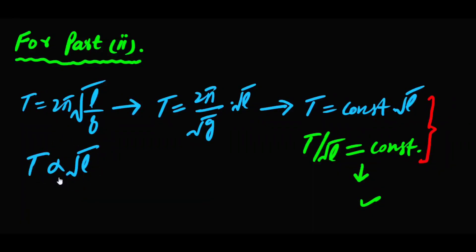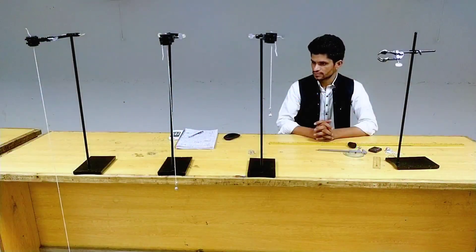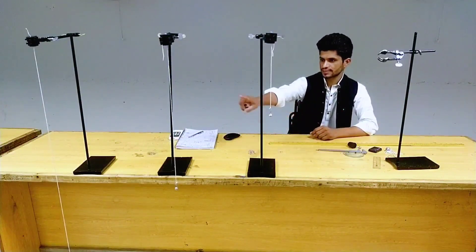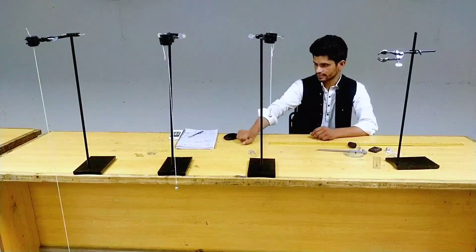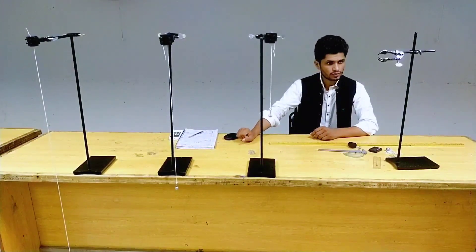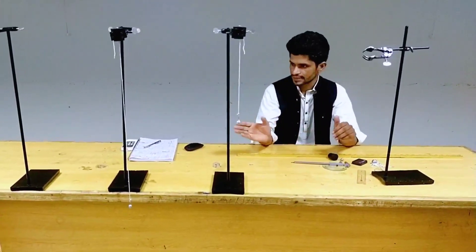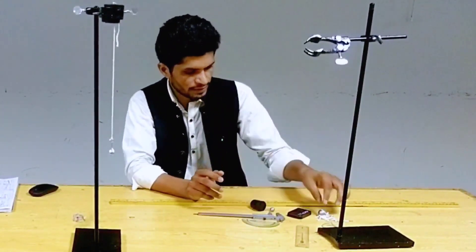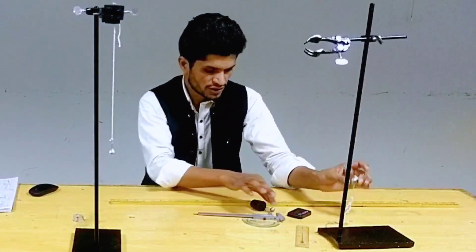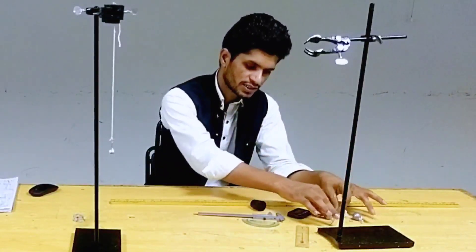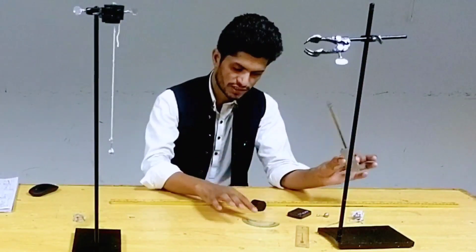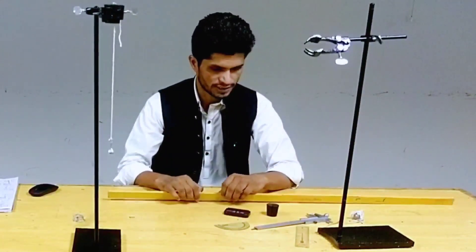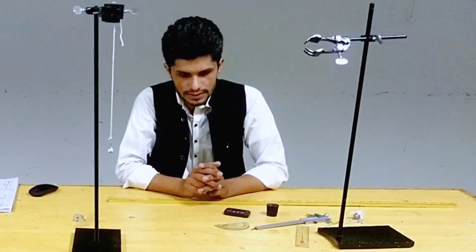السلام علیکم! Simple pendulum کا apparatus set کر کے رکھا ہوا ہے۔ یہاں تین pendulums ہیں: 25 cm، 56 cm، اور 100 cm۔ Apparatus میں metallic bob، thread، vernier caliper، protractor، digital stopwatch، rubber cock، اور meter rod ہونا چاہیے۔ Weight balance بھی رکھنا چاہیے۔